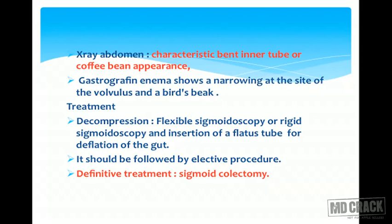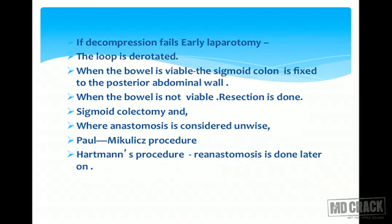X-ray abdomen shows the characteristic bent inner tube or coffee bean appearance. Gastrografin enema shows narrowing at the site of the volvulus and a bird's beak appearance. Treatment is mainly decompression by flexible or rigid sigmoidoscopy and insertion of a flatus tube for deflation of the gut, followed by elective procedures. Definitive treatment is sigmoid colectomy. If decompression fails, early laparotomy should be done.